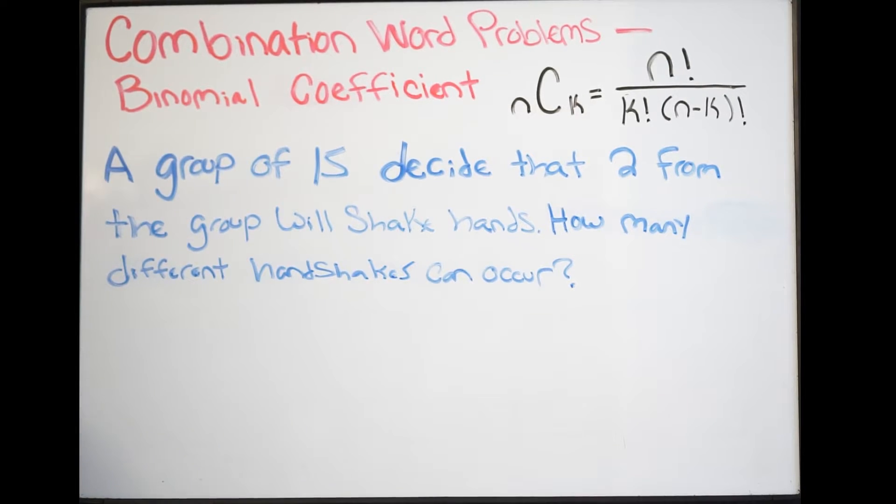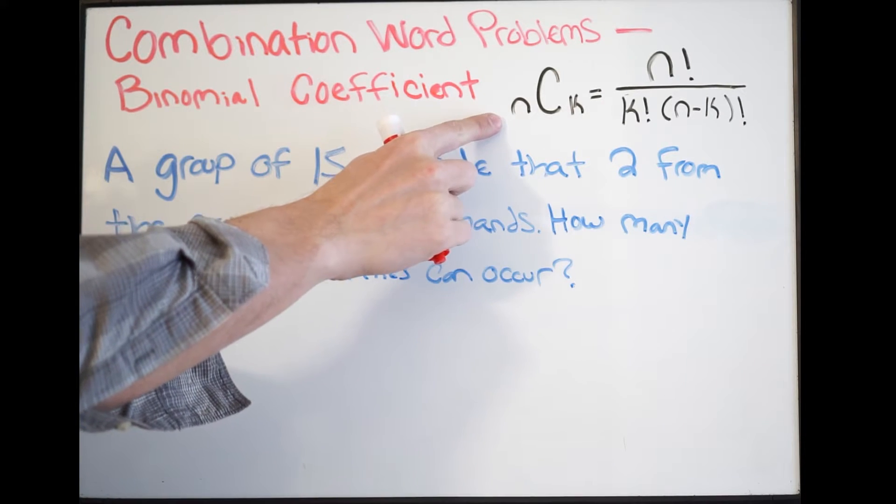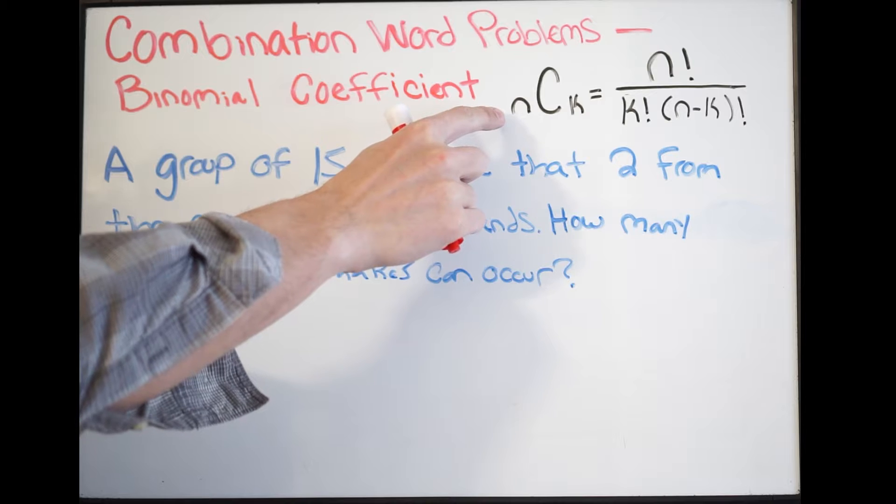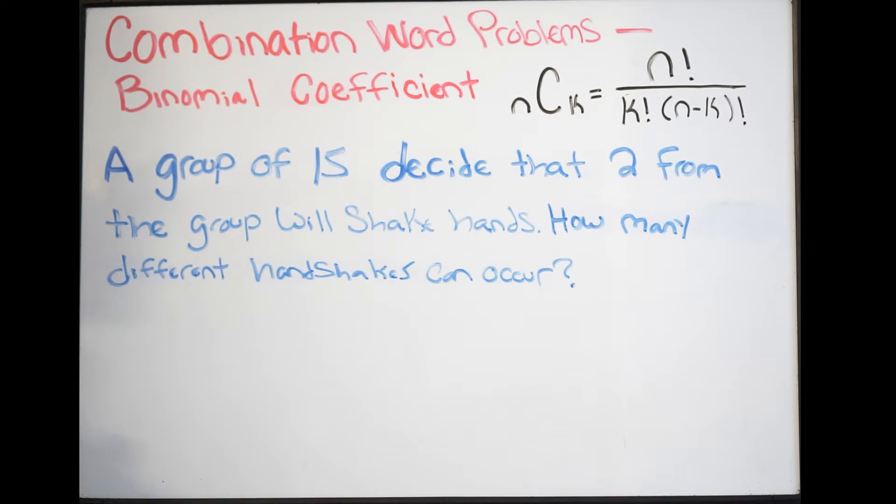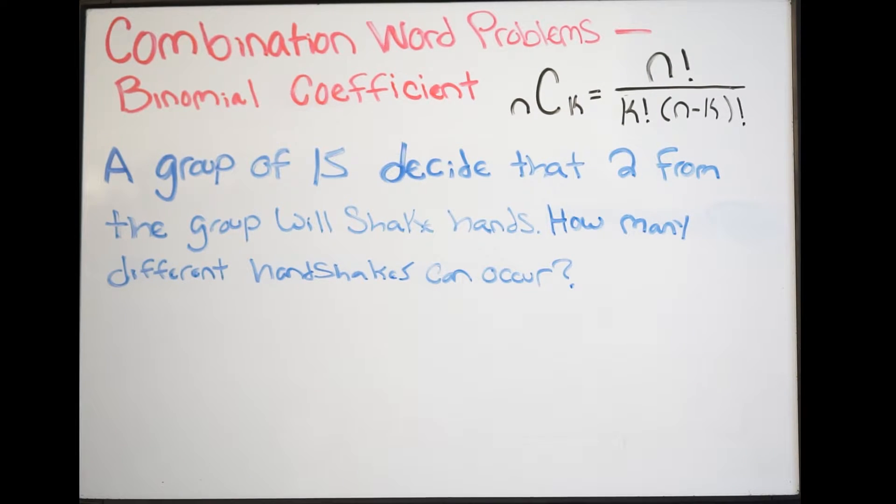We want to find our values here. What is n and what is k? Here is the equation for our binomial coefficient. This simply reads n choose k, where n is our total and k is the number we are choosing from. In other words, this means the number of ways you can choose k items out of n.